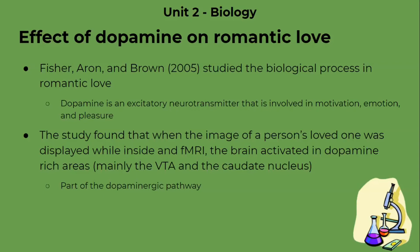The study found that when an image of a person's loved one was displayed while the person was inside an fMRI, the brain activated dopamine-rich areas — specifically the ventral tegmental area and the caudate nucleus. So when someone looked at someone they loved, it promoted romantic love and activated pertinent brain areas that are part of the dopaminergic pathway. This shows how dopamine plays a role in romantic love.